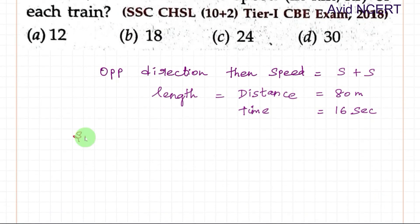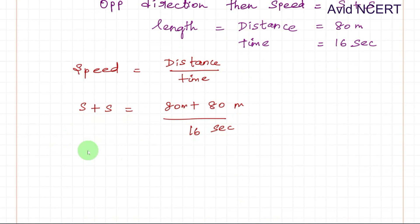The formula we know here is speed equals distance by time. Substituting all the values, speed is s plus s, distance equals 80 plus 80, the length of two trains, divided by time is 16 seconds. So 2s equals 160 meters divided by 16 seconds, which equals 10 meter per second.